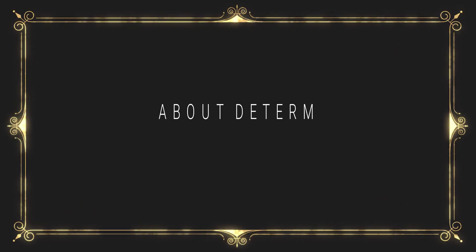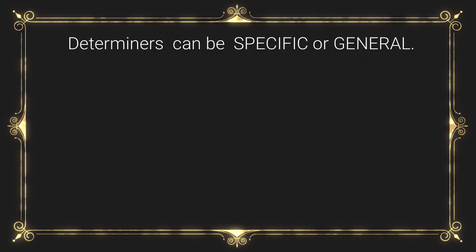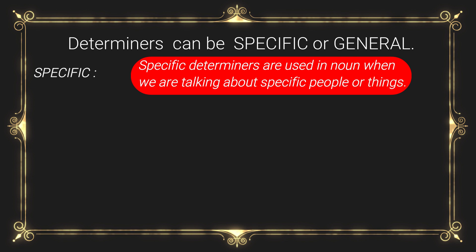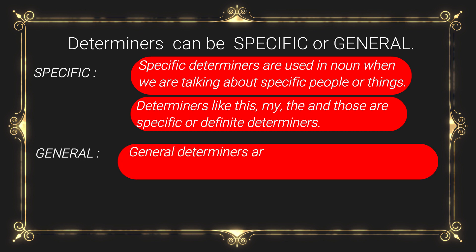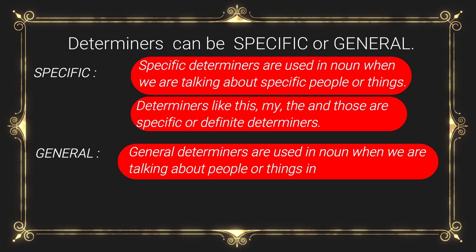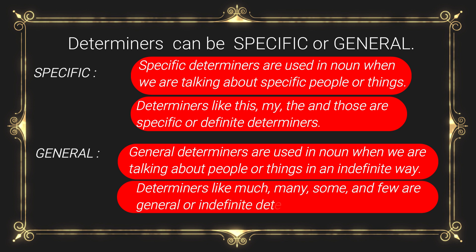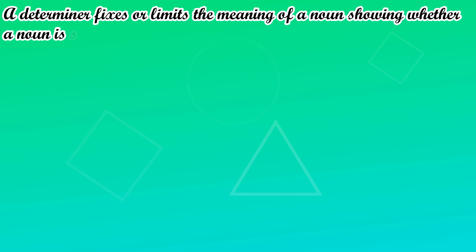I hope it is clear what determiners are. Now let us know more about them. Determiners can be specific or general. Specific determiners are used when we are talking about specific people or things. General determiners are used when we are talking about people or things in an indefinite way. A determiner fixes or limits the meaning of a noun, showing whether a noun is specific, general, or negative.